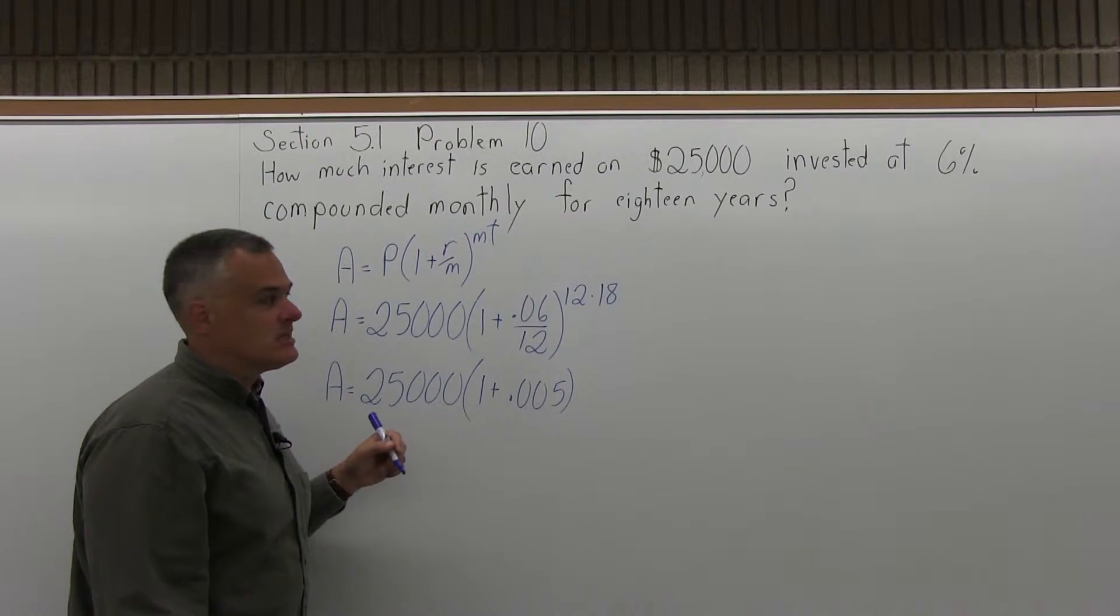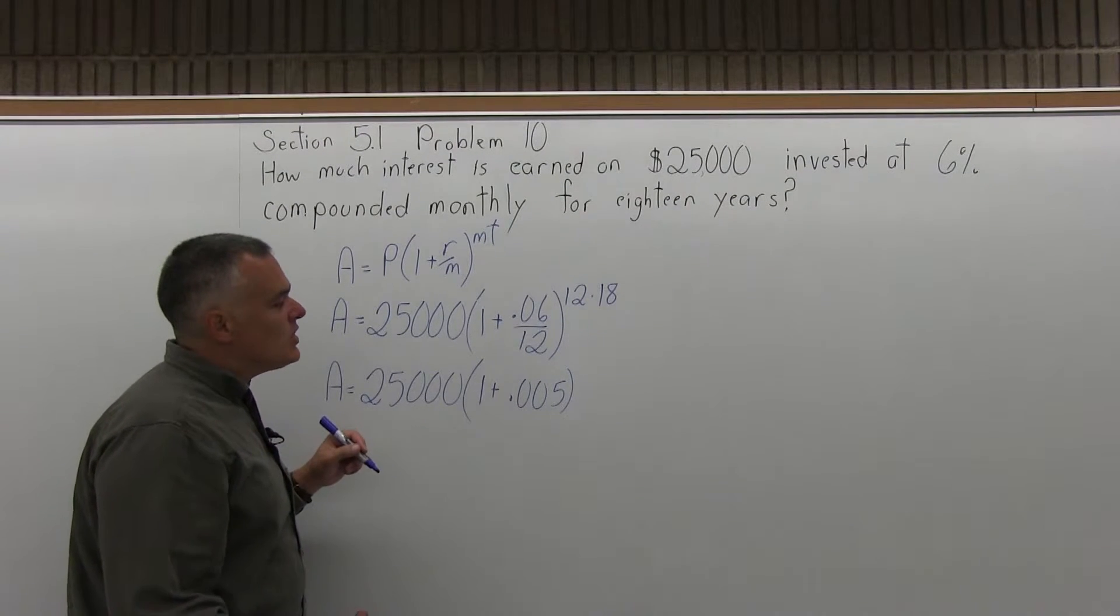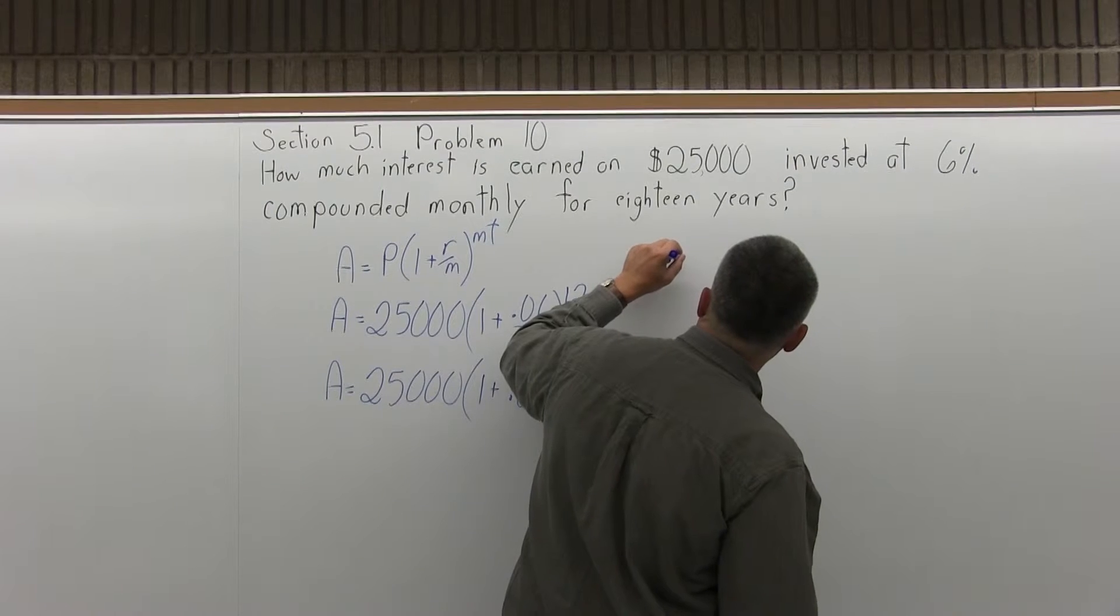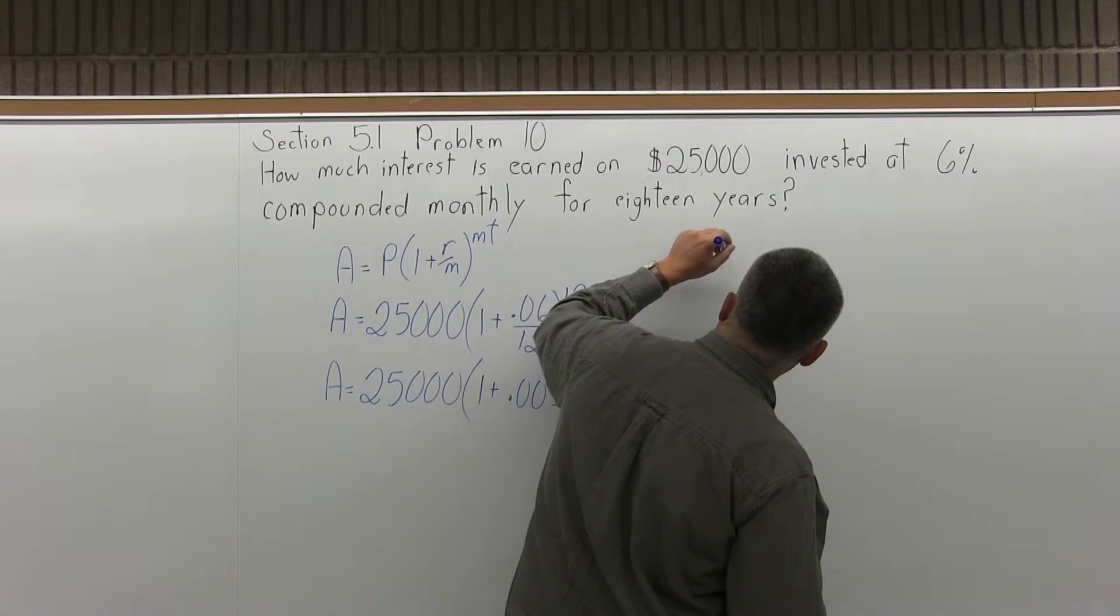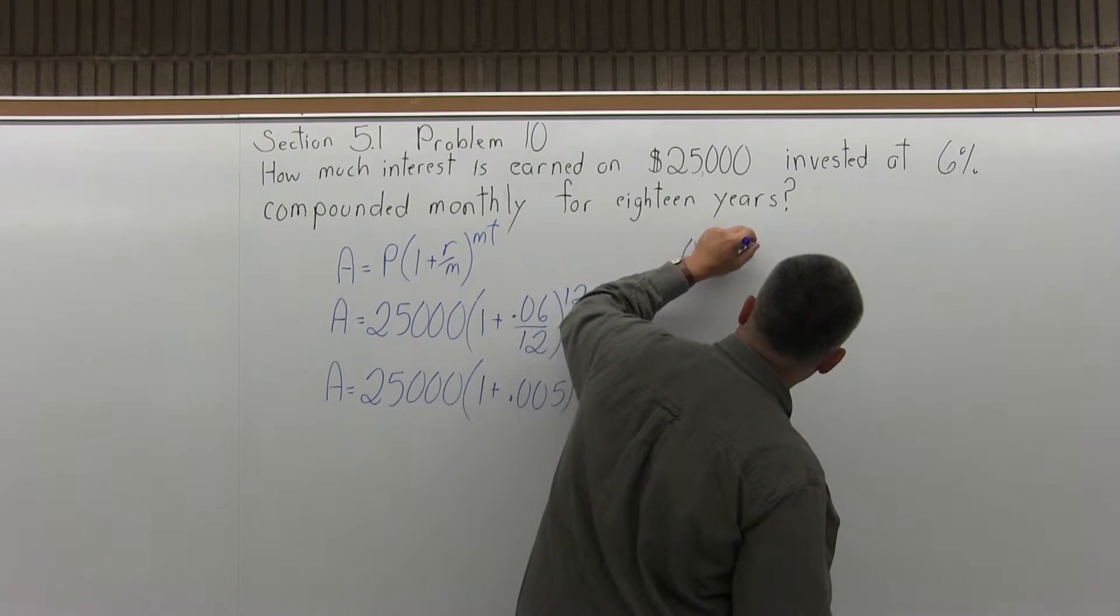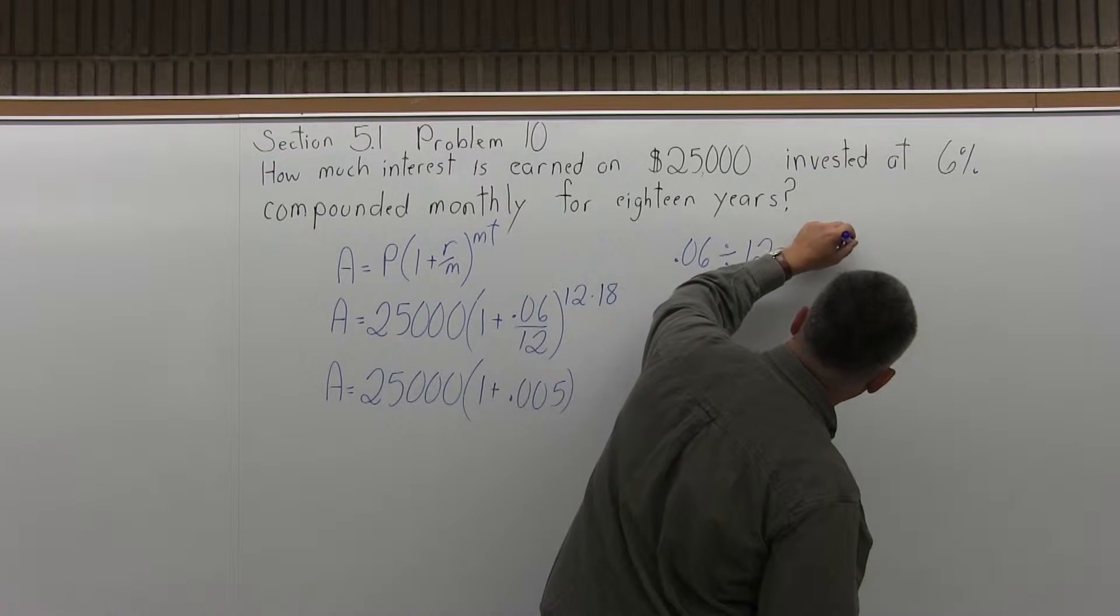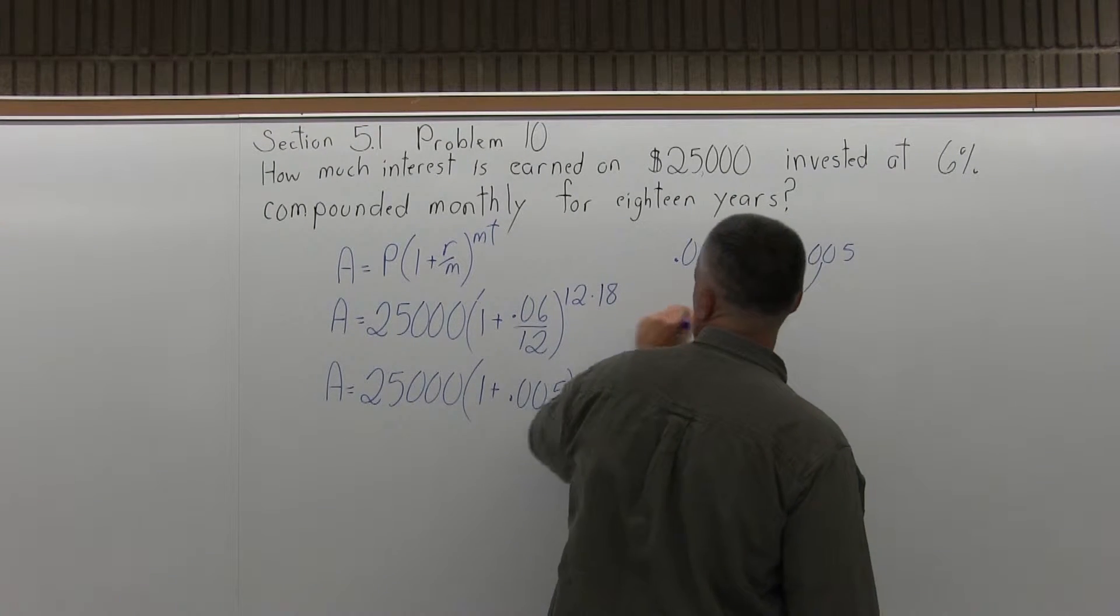Now I do that reduction pretty easily without a calculator. If you don't feel comfortable with that, just take your calculator, do 0.06, the top of the fraction, divide by 12, the denominator of the fraction, equals, and the calculator will tell you it's 0.005.